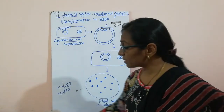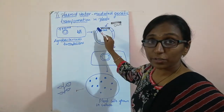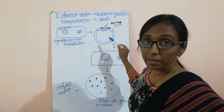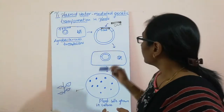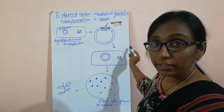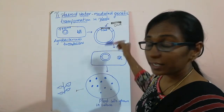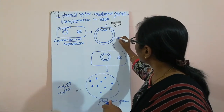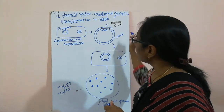Now we are ligating our desired DNA into the T-DNA region of the Ti plasmid. That is the ligation of our desired DNA into the T-DNA. After ligating, this is nothing but a recombinant DNA — so this recombinant DNA is formed by ligating our desired DNA into the vector.